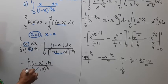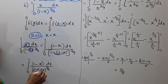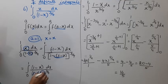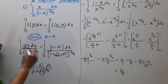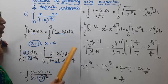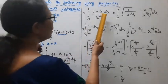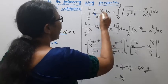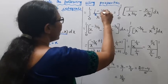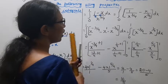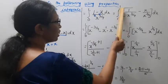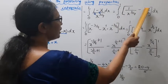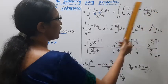Adding the two integrals: 2I equals integration 0 to 1 of [(1 minus x)/x^(3/4) plus x/( 1 minus x)^(3/4)] dx. The (1 minus x)^(3/4) terms cancel, giving integration 0 to 1 of 1 by x^(3/4) dx, plus integration 0 to 1 of (1 minus x) by x^(3/4) dx.